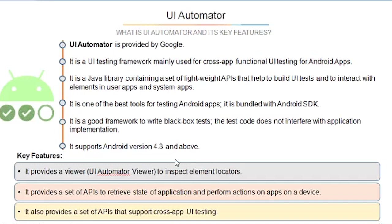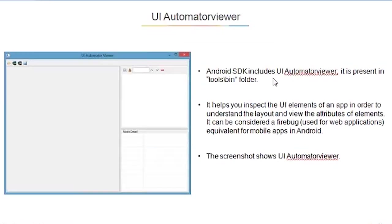UI Automator is one of the best tools for testing Android apps. It is bundled with the Android SDK and is a good framework to write black-box tests — the test code does not interfere with the application implementation. It supports Android version 4.3 and above. It provides a UI Automator Viewer to inspect element locators and APIs to retrieve the state of an application and perform actions on the device.